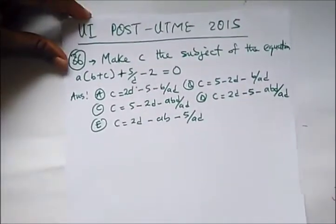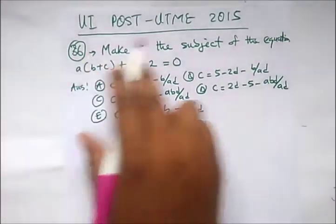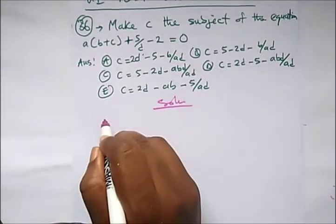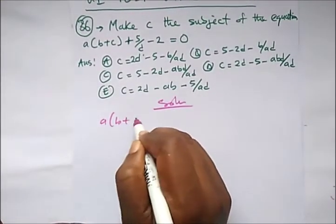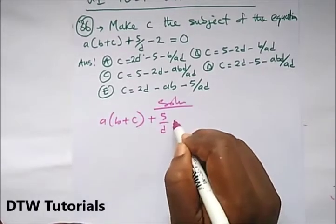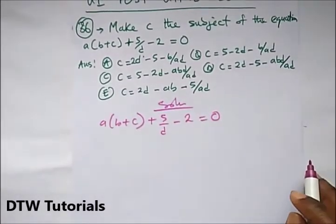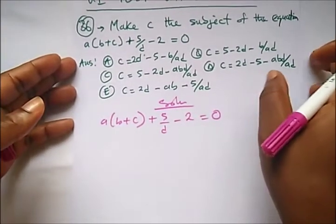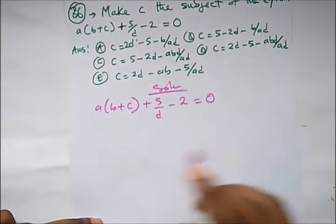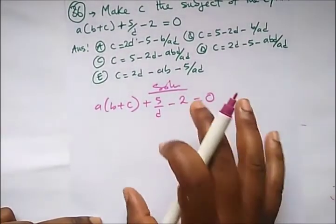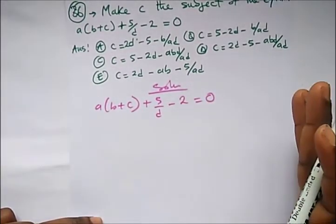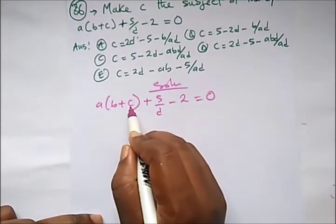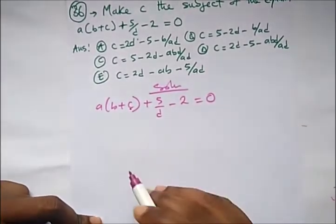Our next question says: make C the subject of the equation. I've treated this topic also — try to go through that video for revision. UI past questions are basically JAMB syllabus. They have 25 questions without a calculator, and it's JAMB syllabus, so all you need to do is revise your JAMB material. I've also created videos on JAMB past questions covering over 20 topics, so try to watch and subscribe. So here we're making C the subject — that's just the change of subject formula.